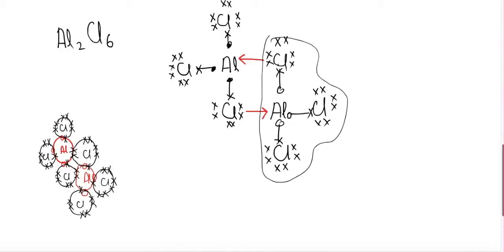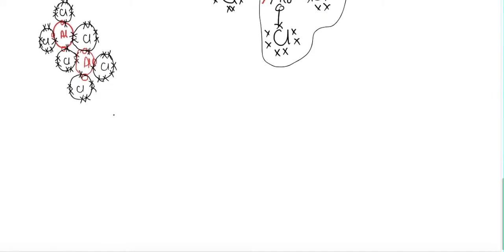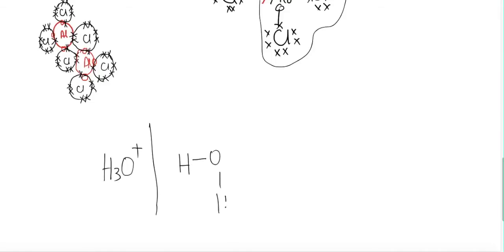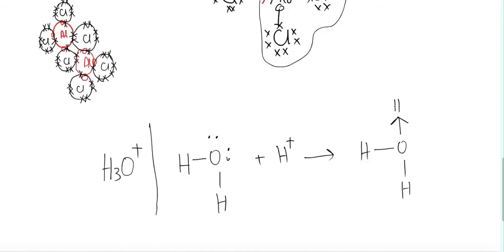Another example is the hydronium ion, H3O+. A water molecule, H2O, has two lone pairs on oxygen. The H+ ion makes a bond with one of these lone pairs of oxygen, forming the hydronium ion through a coordinate covalent bond. The overall molecule becomes positive because a positive species is added into the neutral water molecule.